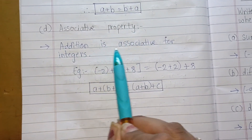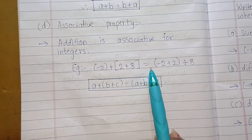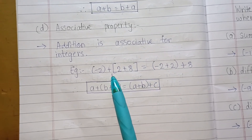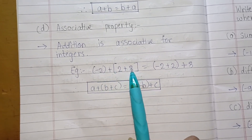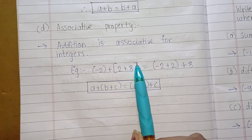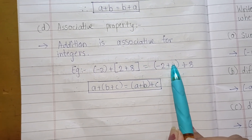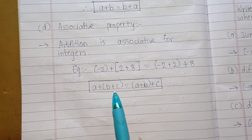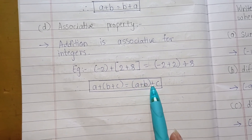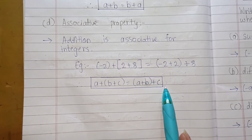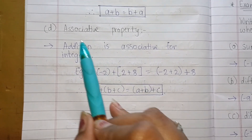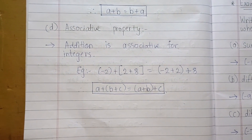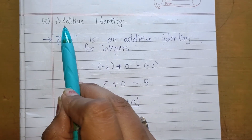The next property is Associative Property. Addition is associative for integers. When there are three integers, whether we add the first two or the last two first, the answer is always the same. That is: a plus (b plus c) equals (a plus b) plus c. So we can say addition is associative for integers.